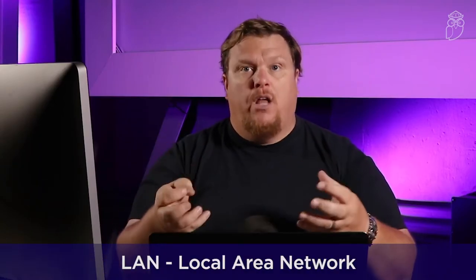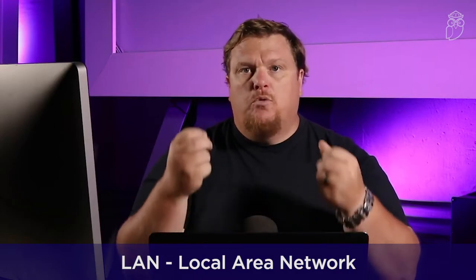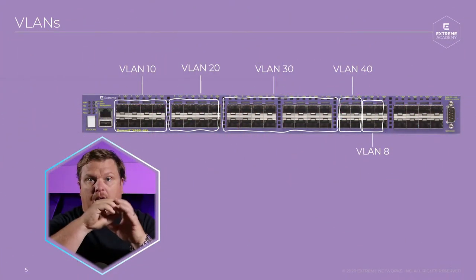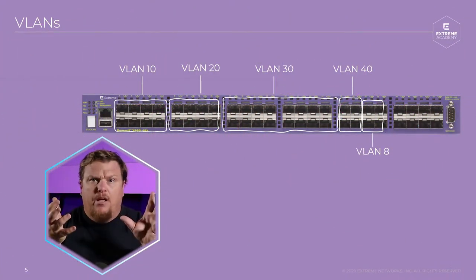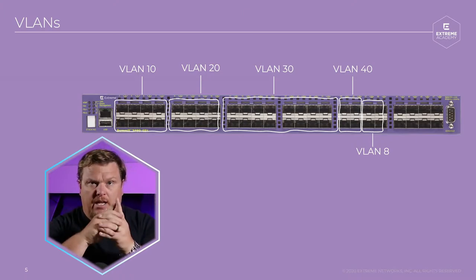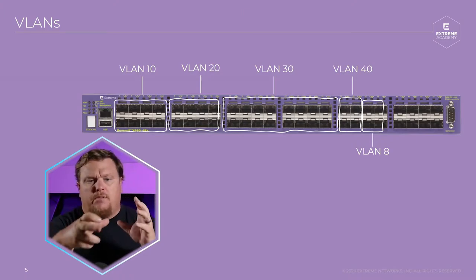Another function of a switch is something called VLANs. We learned about the term LAN — a local area network. A virtual LAN is a way to identify physical ports on a switch and say okay, this port is VLAN 10. Maybe the first 10 ports are VLAN 10, the next 10 are VLAN 20, the next 10 are VLAN 30. It's a grouping of devices at the network level.